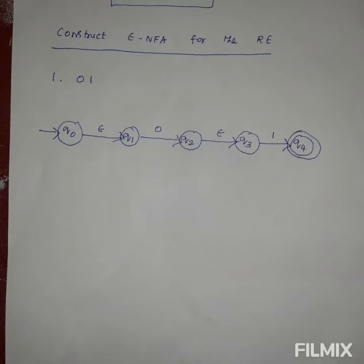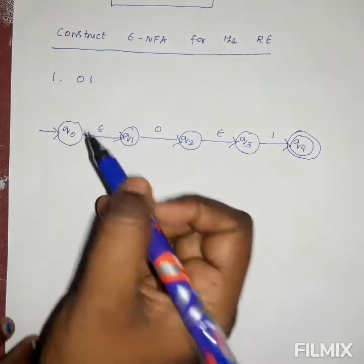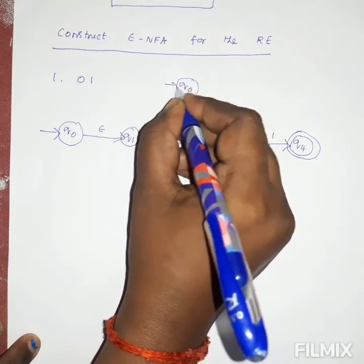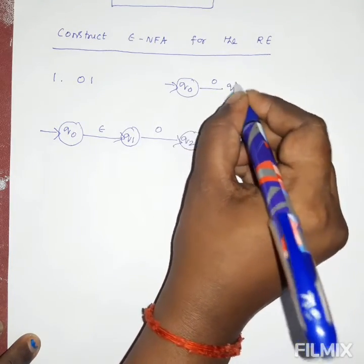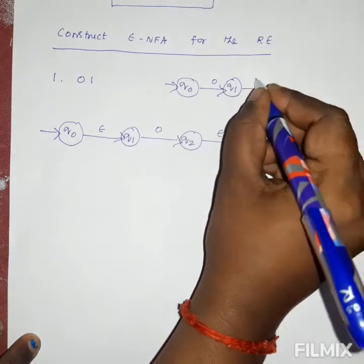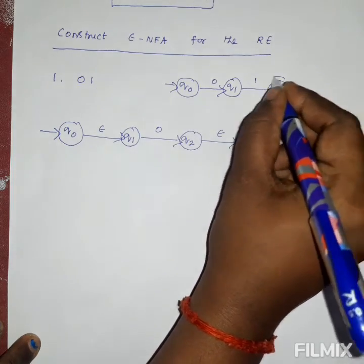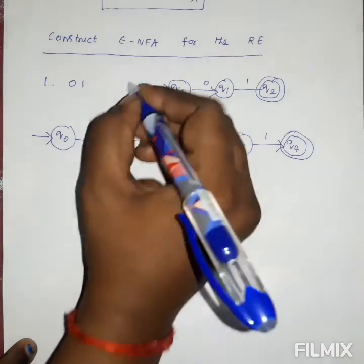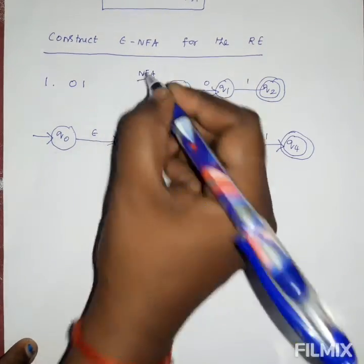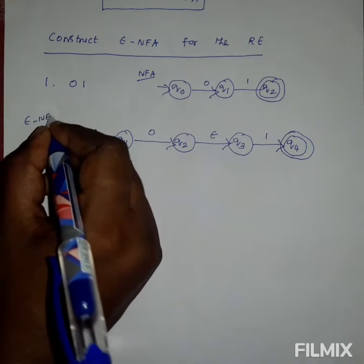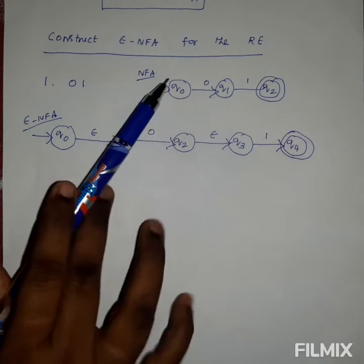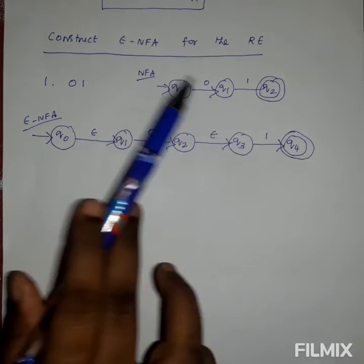You can also draw normal NFA for this regular expression: q0 gets 0 and goes to q1, and q1 gets 1 and goes to q2. That is the normal NFA. But this is the epsilon-NFA. You can see the difference easily — in the NFA there are no epsilon transitions between states, but in the epsilon-NFA, epsilon is one of the inputs passed from one state to another state.